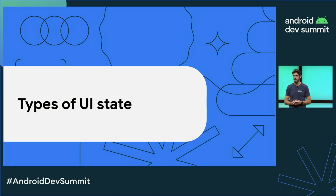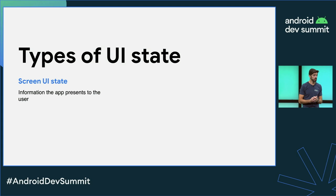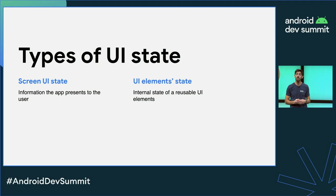In the UI layer, you can find different types of state. The first one is the screen UI state, which contains the information we need to present to the user, mostly application data. Then we have the UI element state, or the internal state of UI elements. To see some examples, we are going to look at the Now in Android app, which is open source — you can check out the source code there.